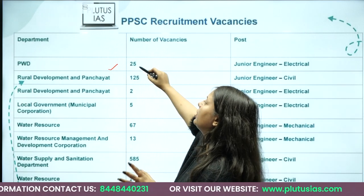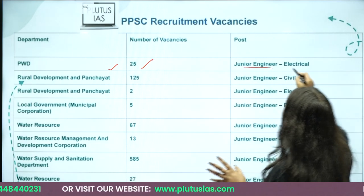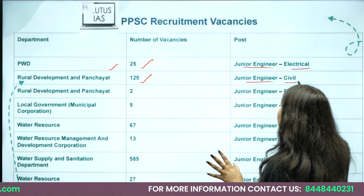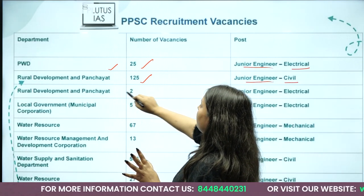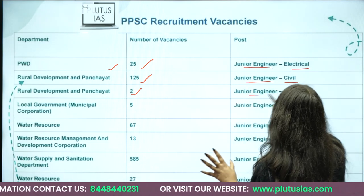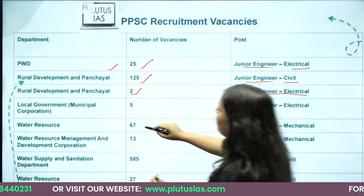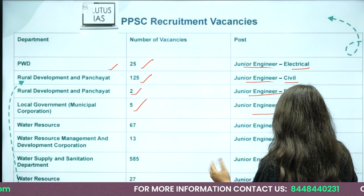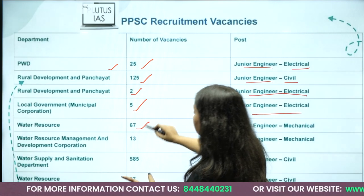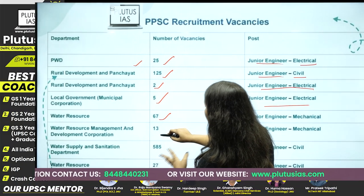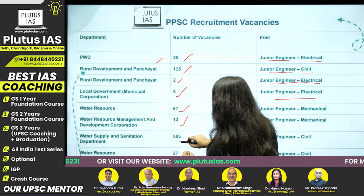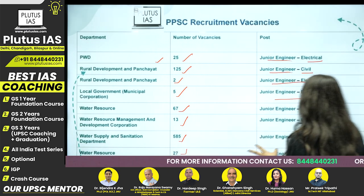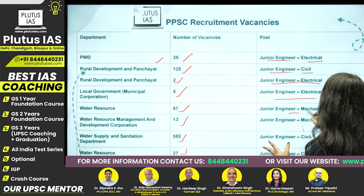Under PWD, there are 25 vacancies for Junior Engineer Electrical for Rural Development and Panchayat, and 125 posts for Junior Engineer Civil for Rural Development and Panchayat. There are 2 vacancies for Junior Engineer Electrical for Local Government Municipal Corporation, 67 for Water Resources, 13 for Water Resources Management and Development Corporation, and 585 for Water Supply and Sanitation Department.